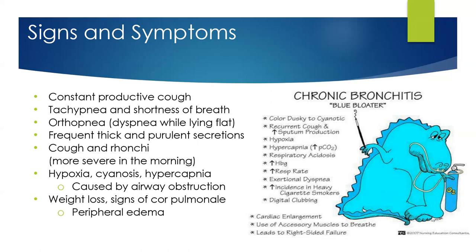Signs and symptoms of chronic bronchitis include constant productive cough, tachypnea — fast breathing and shortness of breath. The cough is prevalent because they're constantly trying to cough that thick mucus up and out. Patients get orthopnea — difficulty breathing when lying flat — because secretions pool over both sides of the lungs when flat. They get frequent thick and purulent secretions, coughing that is worse in the morning, hypoxia, cyanosis, and hypercapnia. The nickname for chronic bronchitis patients is 'blue bloater' — they have low oxygen levels making them blue in color. Unlike the pink puffer of emphysema, these patients tend to be hypoxic and will need oxygen much earlier.